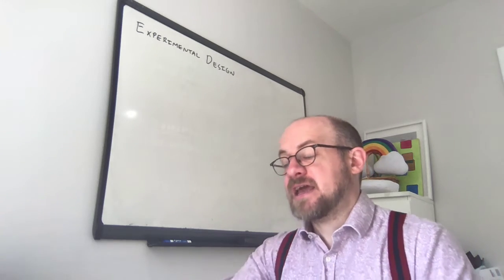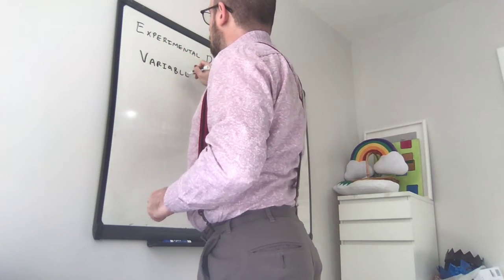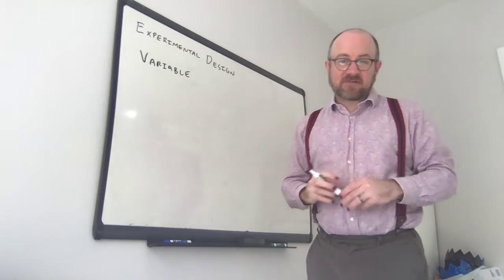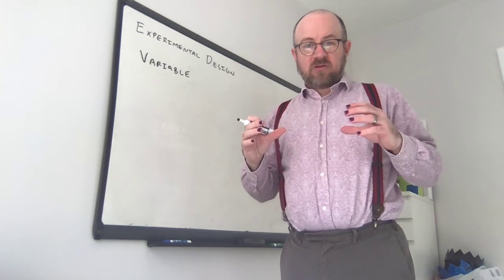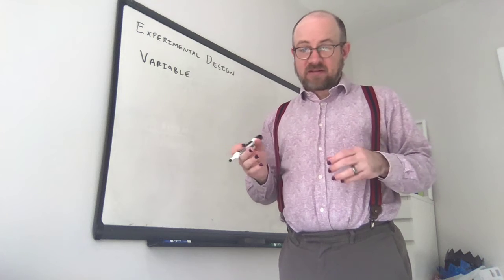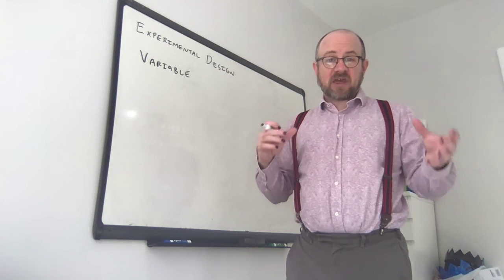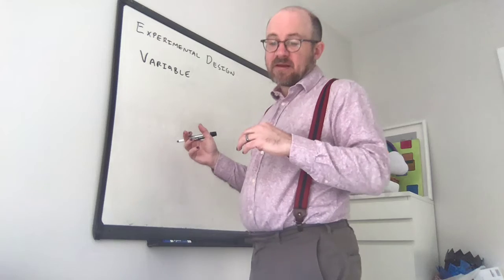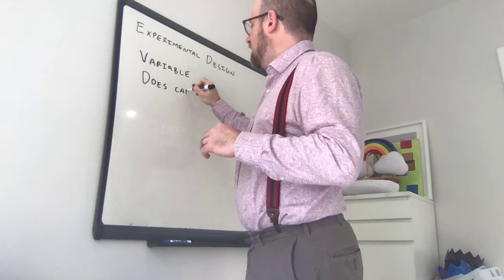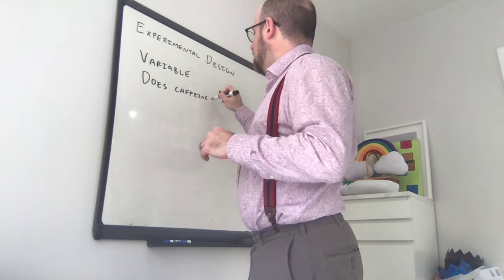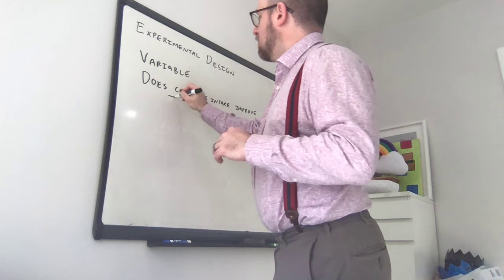The first thing we're going to talk about in experimental design is the idea of a variable. If you think about conducting an experiment and trying to study something, the idea of a scientific experiment — whether that's physical science, social science, or whatever you're studying — is always to try and explain one thing in terms of another. So you might ask something like: does caffeine intake improve test scores?